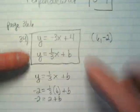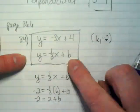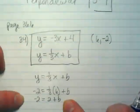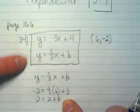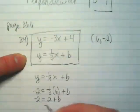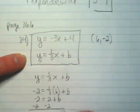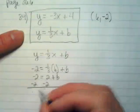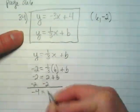I'm doing this work because what am I missing up here? The b. So if I get this b by itself, I'm going to find out where this second line would cross the y-intercept. I'm going to subtract two, and I end up with negative four equals b.